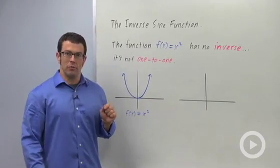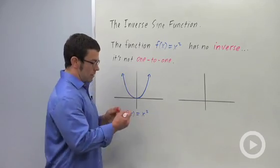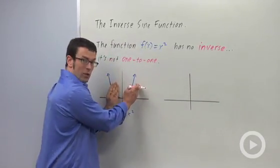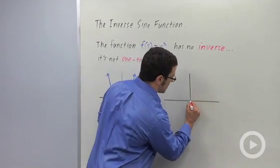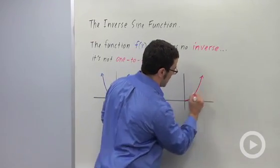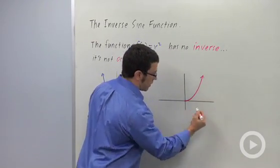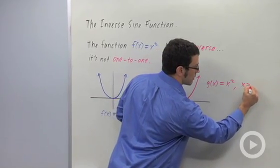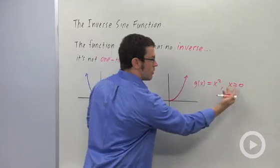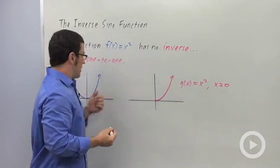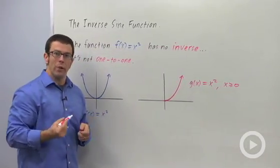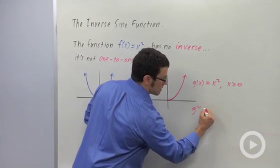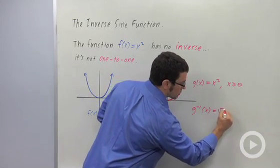But we can make it invertible by restricting the domain. The way we do that is we just take a piece of it that is one-to-one, like the right hand piece. So let's focus on this piece here. I'll call it g of x, and it's x squared for x greater than or equal to 0. So this domain restriction makes this function one-to-one, and now we can invert it. Its inverse would be g inverse of x equals root x.